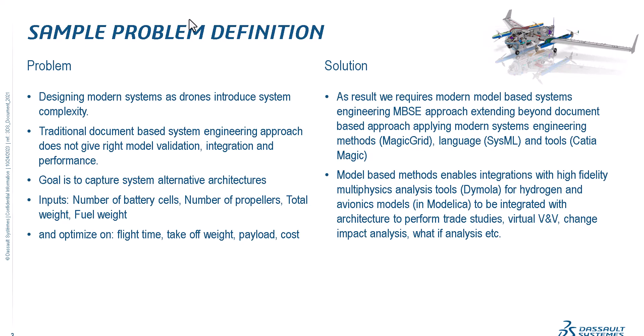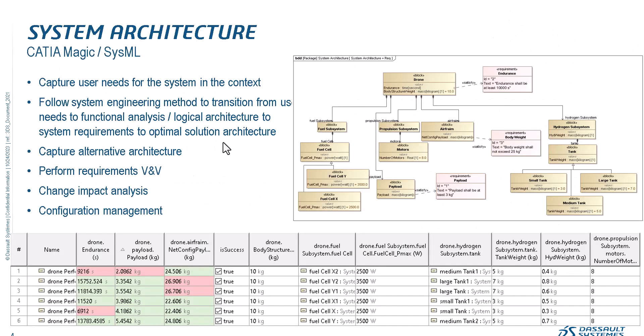The solution is to apply modern model-based system engineering — a MBSE approach extending beyond document-based methods, applying system engineering methods like Magic Grid with SysML, and tools like Dymola. This effectively enables integration with high-fidelity multi-physics analysis tools, leading in avionics and hydrogen models in Modelica, to perform trade studies, virtual VnV, change impact analysis, and what-if analysis.